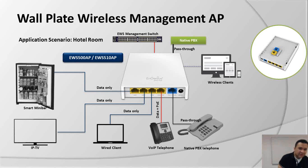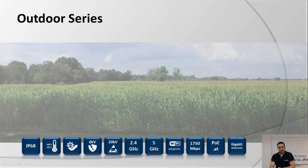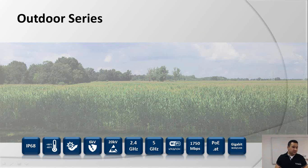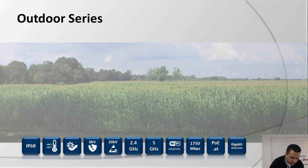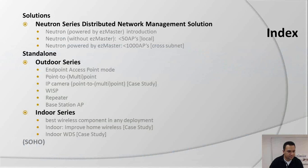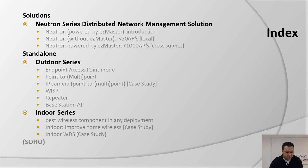The wall plate access points will come in single band and dual band models. That concludes the Neutron series / EasyMaster section. Now let's go to the outdoor series from the standalone category.